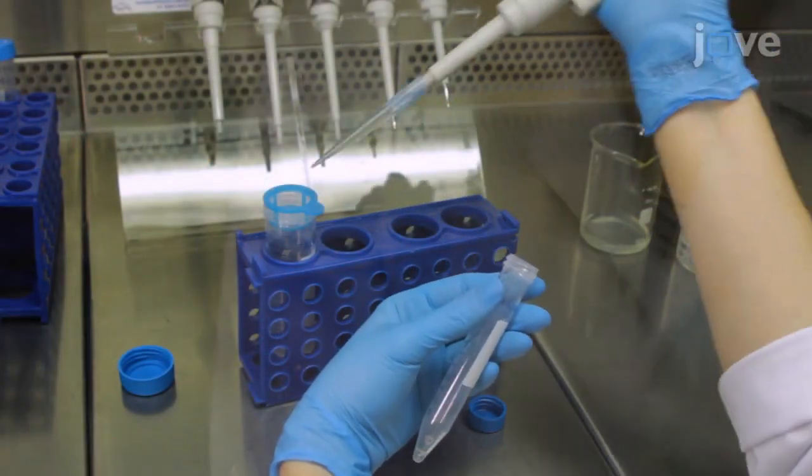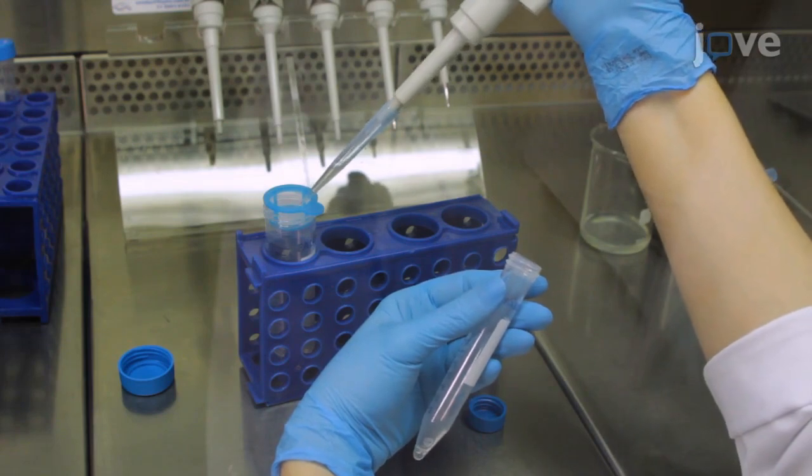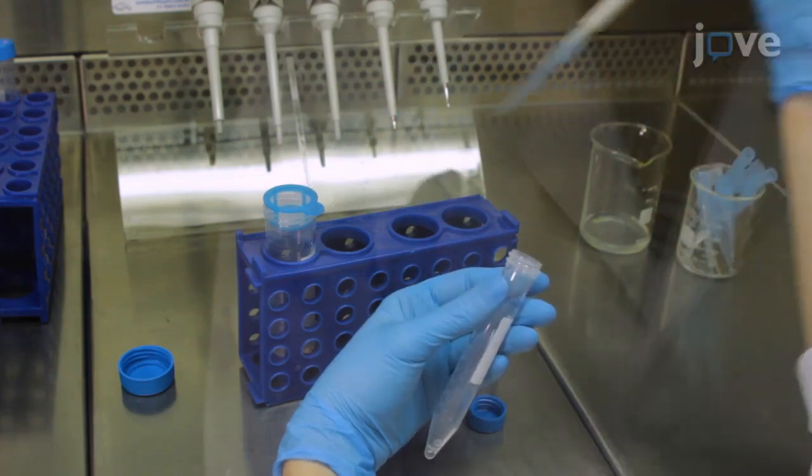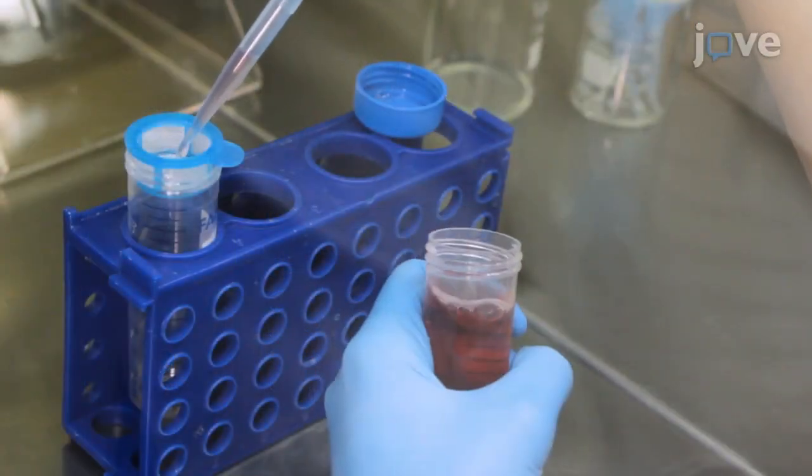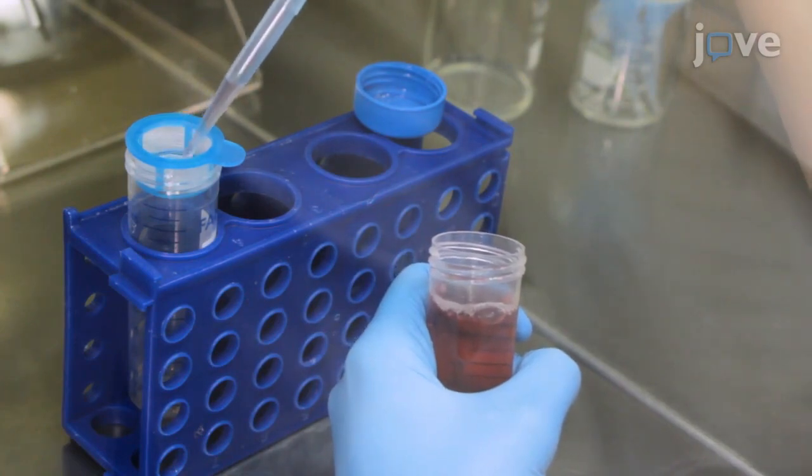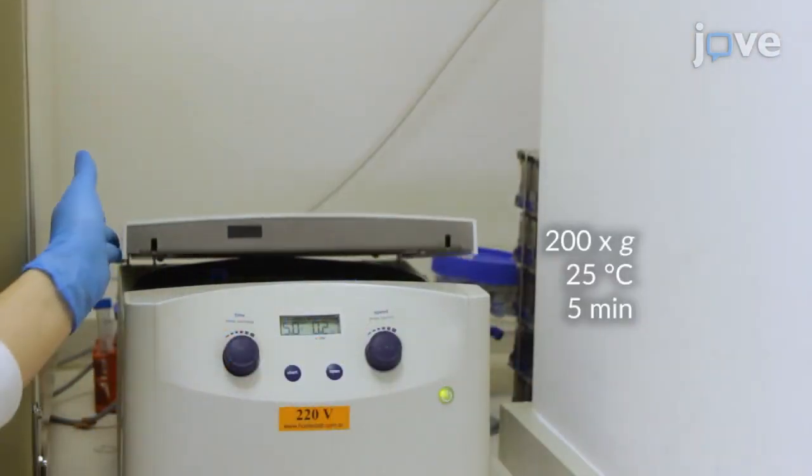Filter the suspension through a 0.4-micrometer cell strainer filter to remove non-dissociated fragments. Wash the filter with 1 ml of astrocyte medium and pellet down the filtered cell suspension by centrifugation.